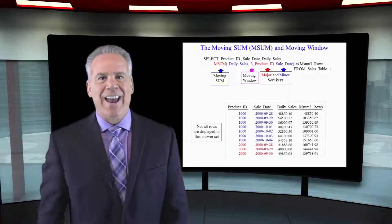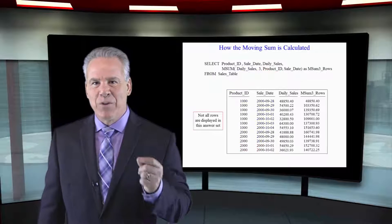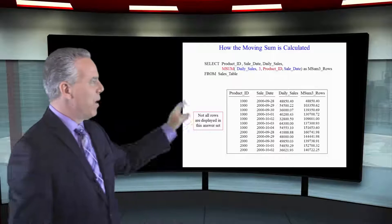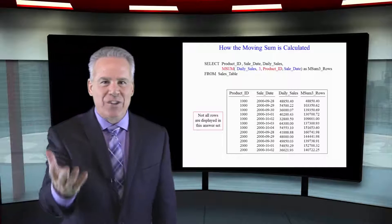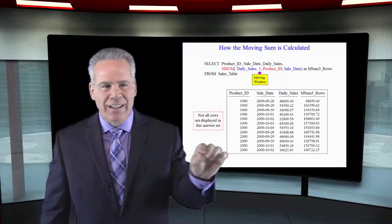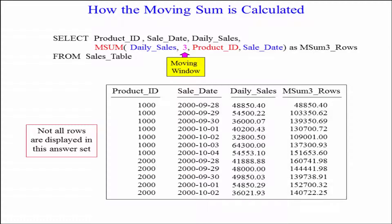We're doing a moving sum on the daily sales every three rows, after we first sort by product ID and sale date. Once the data is sorted, we're ready to do the moving sum, calculated every three rows. Row three in red shows $139,350.69. Since the moving window is three, it takes the current row of $36,000 plus $54,500 plus $48,000 — that's how this calculation is done every three rows.